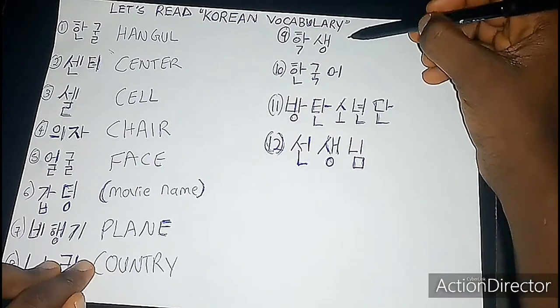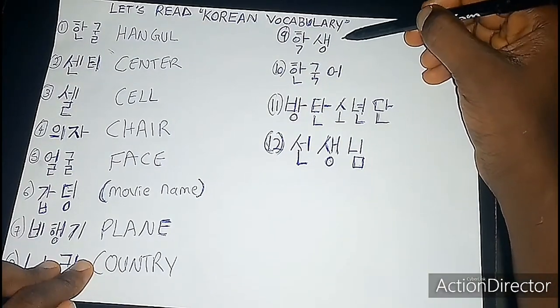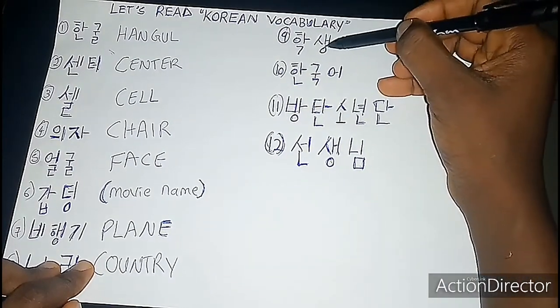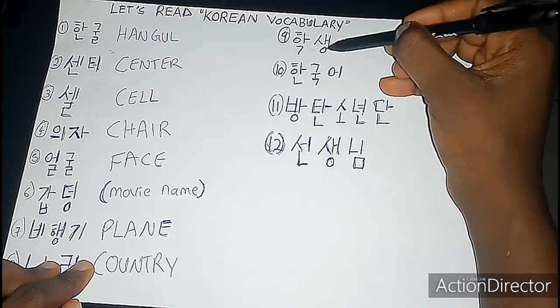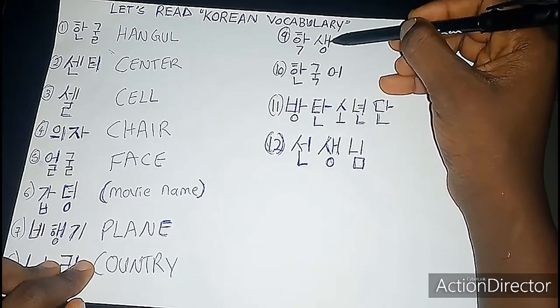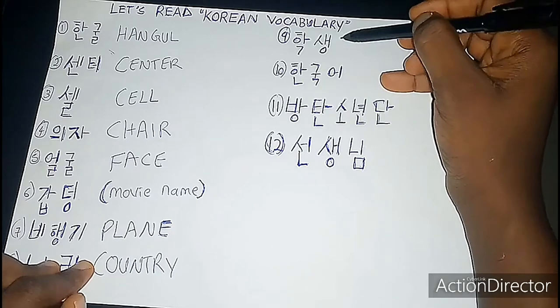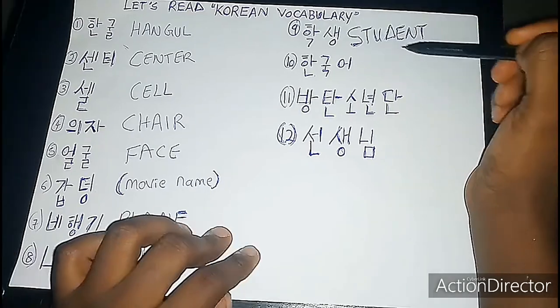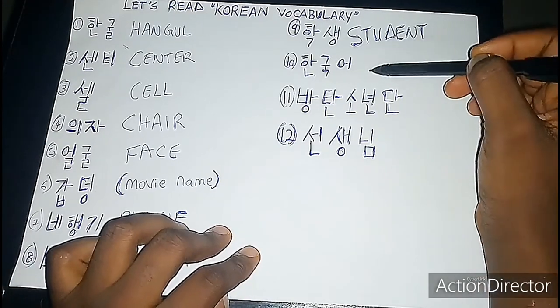Now this is 학생 — haksaeng. You can see that when this character is used as an ending consonant, it has the 'ng' sound. Haksaeng. This is the word for 'student.'